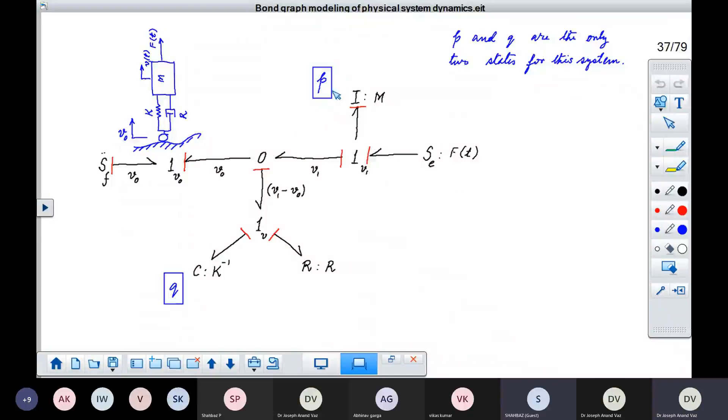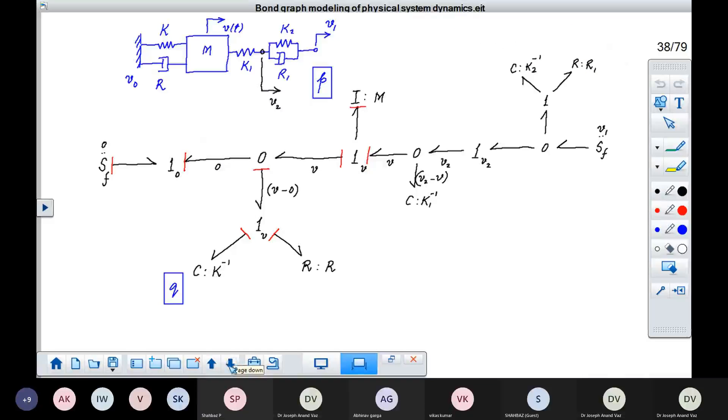So we have this momentum, which is the state associated with this I element. And we have this generalized displacement, Q, which is associated with this C element. Now, suppose you want to extend this problem. You want to add this spring damper combination to this.